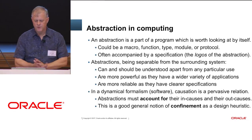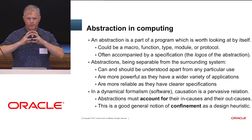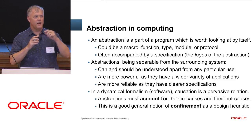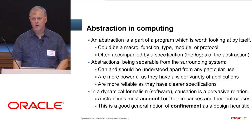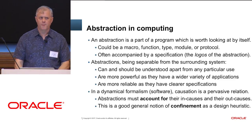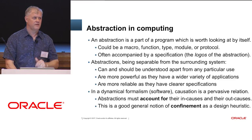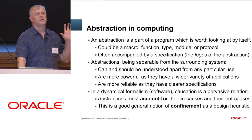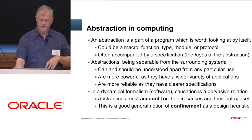This brings us to confinement. In a dynamical formal system — which is software — there are causes and effects flying around all over the place. You have to account for causes and, just as importantly, block away causes so they don't affect the abstraction you're trying to build. That's why confinement is a good design heuristic. A confined piece of code has a boundary, and across that boundary causes go out where the code is affecting something else, and causes come in where the code is being affected. We want to remove the irrelevant and disruptive causes.